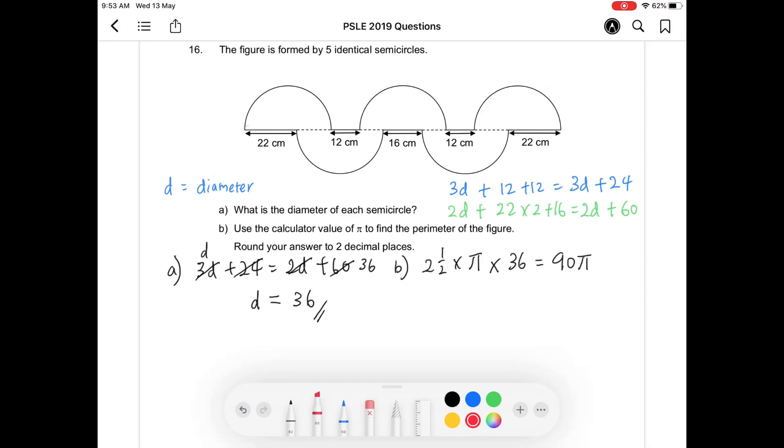So 90 pi refers to the lines that I'm highlighting in red. To find the entire perimeter of the figure,